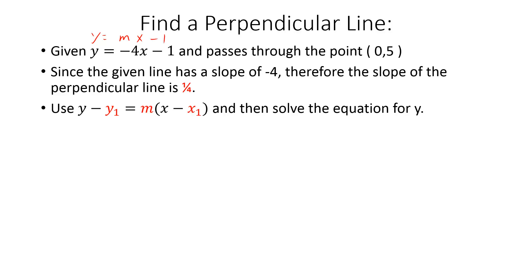We want to write an equation of a line perpendicular to that one, passing through the point (0, 5). Since the given line has a slope of negative 4, the perpendicular slope must have the opposite sign and be flipped: that's positive one-fourth. So x1 is 0 and y1 is 5. Plugging into point-slope form: y minus 5 equals one-fourth times x minus 0.